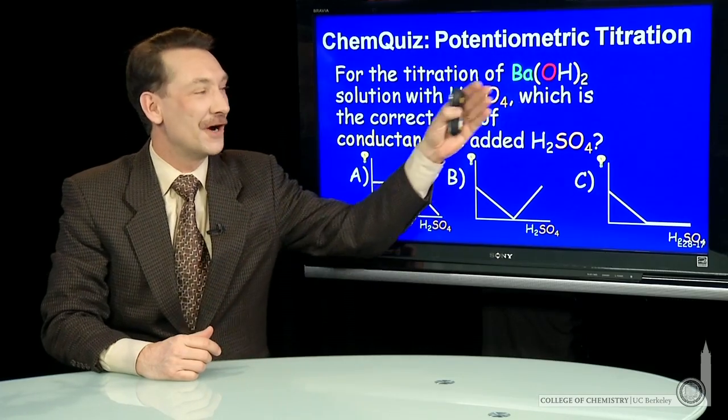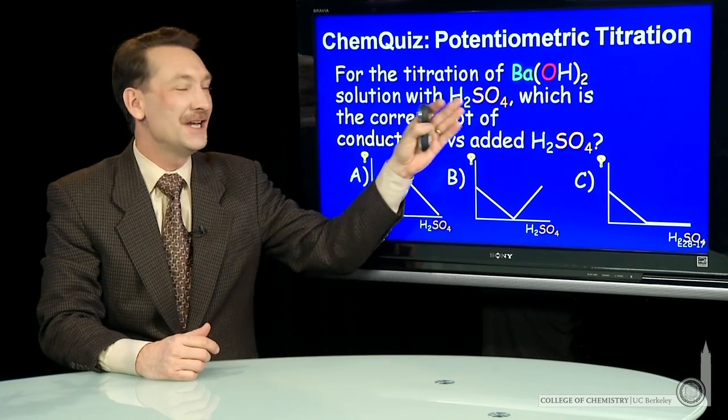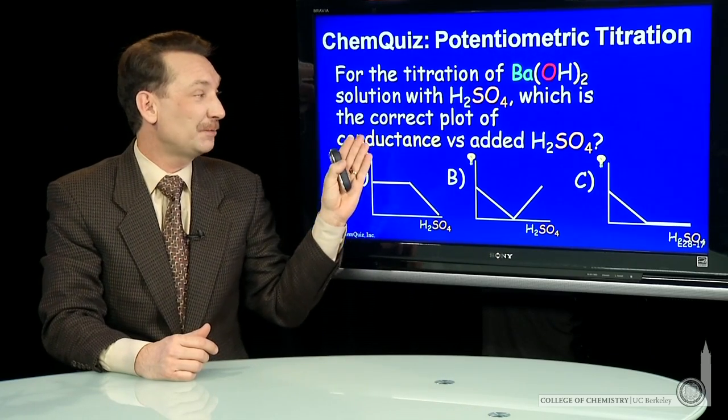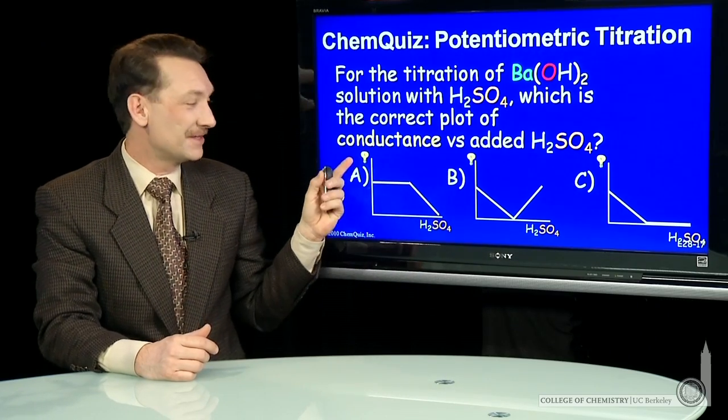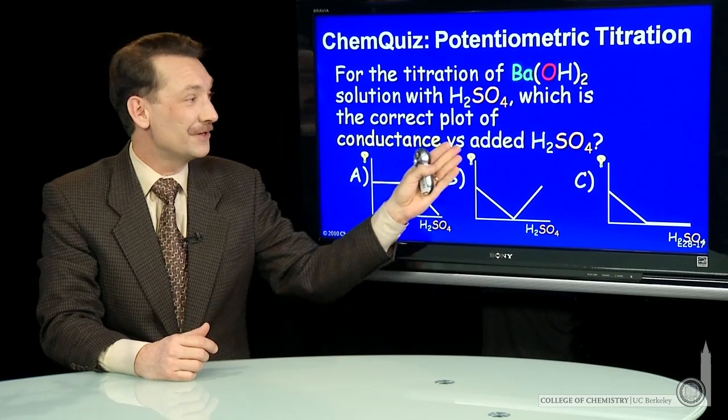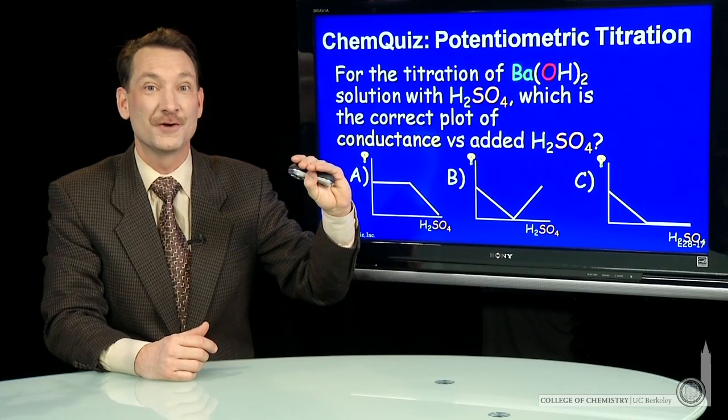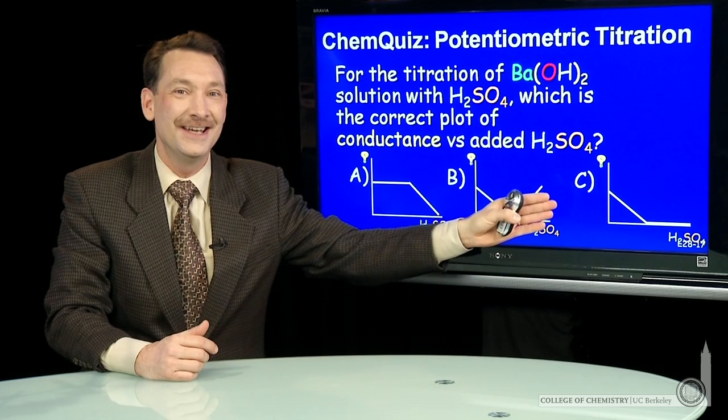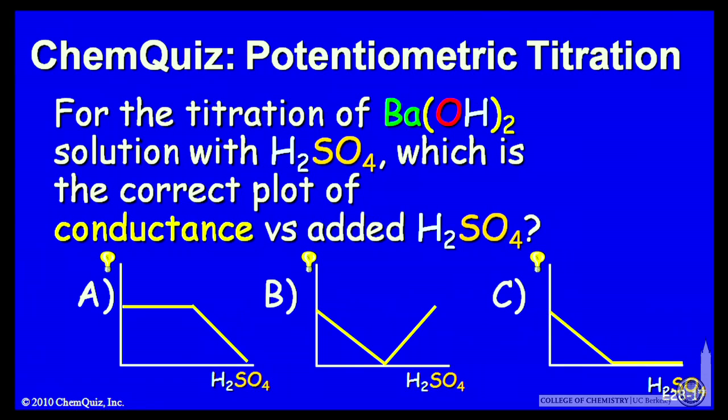Let's look at the titration of barium hydroxide with H2SO4 and try to predict the correct plot of conductance, that is the brightness of a light, versus the added H2SO4. Do you think it'll look like A, B, or C? Think about that for a minute and make a selection.